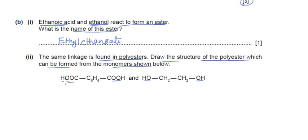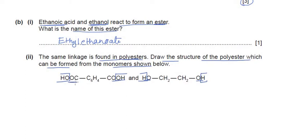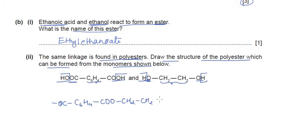Looking at the monomers, we need to remove the OH group from the carboxylic monomer and only H from the alcohol functional group. Joining these two parts of the monomers to make a polymer chain, we start with the CO group, then C6H4, then the CO bond, and then the next monomer starting with O, then CH2, CH2, and then O.